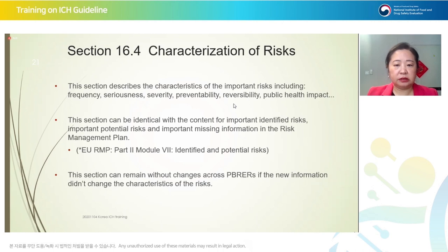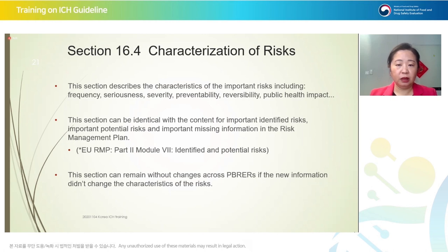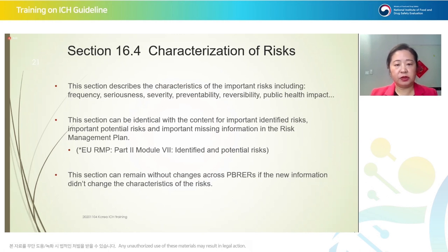Section 16.4 is the characterization of risks. If you have a risk management plan in place, you can copy-paste from the RMP. If not, you do it specifically for the PBIR, and health authorities will assess whether they agree with your characterization. These risk characterizations do not need to be updated every time — if there are no changes throughout the years, this section may remain unchanged for years.